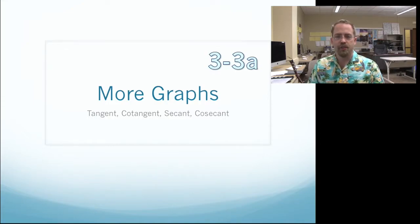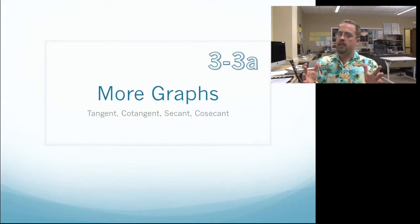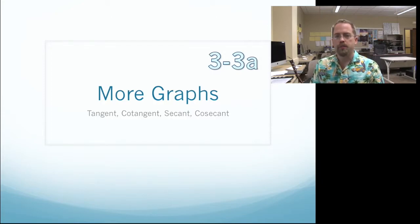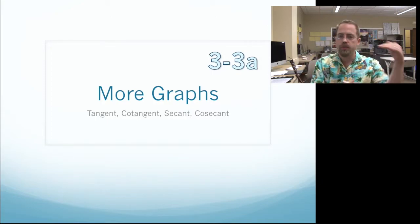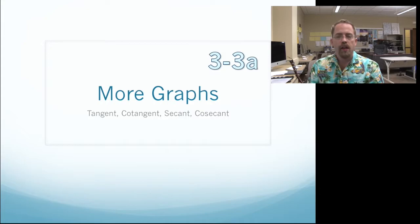Hello class, this is the lecture for 33A from the Forrester textbook and we are continuing to graph the trigonometric functions. Last time we talked about sine and cosine and how they're just pretty nice normal waves that go from 1 to negative 1 and repeat every 360 but you can move them around and mess with them that way.